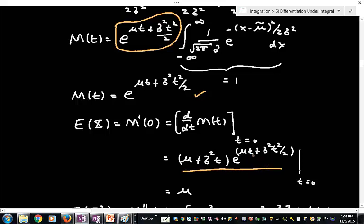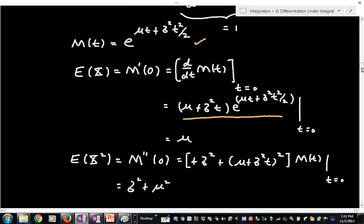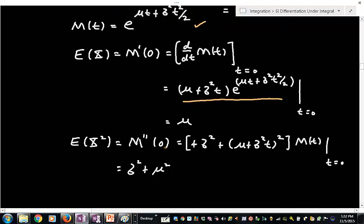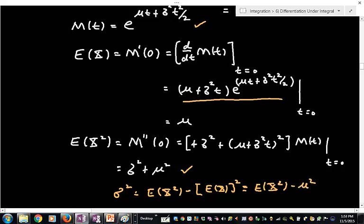Evaluate it at t equal to 0. Of course, the exponent here just becomes 0, so this evaluates to 1. And I end up getting mu, as expected. And I do the same thing for the expected value of x squared. I take the second derivative of m with respect to t, evaluate it at 0. And when you do, we get this result. And we know this is true because we know that sigma squared, the variance, is equal to the expected value of x squared minus the square of the expected value of x, which we just showed was mu squared.